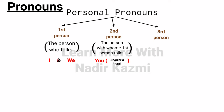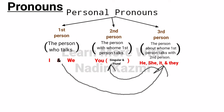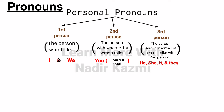Second person is 'you' — the person with whom the first person talks. Woh bandah jis ke saath first person I and we baat kar rahe hote hain, woh 'you' hota hai. It can be you singular or you plural. Third person pronouns are he, she, it, and they — the person or thing about whom the first person talks to the second person.